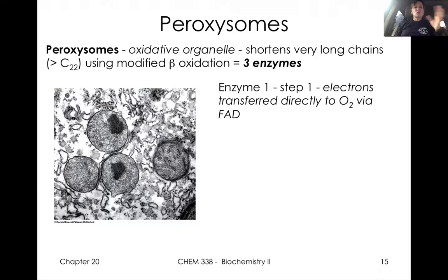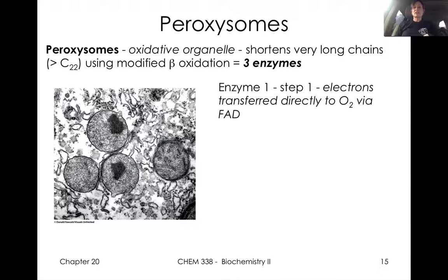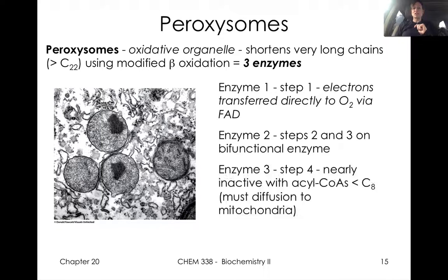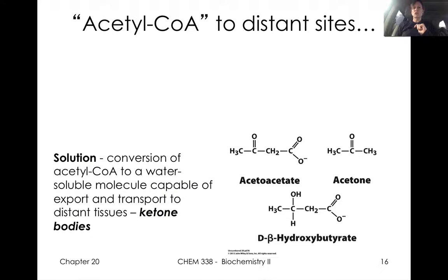Peroxisomes — we'll talk about these as another oxidative organelle. A little bit of fatty acid oxidation occurs in the peroxisomes. Oftentimes it's finished in the mitochondria, but it might start in the peroxisomes.